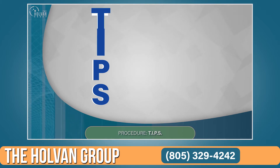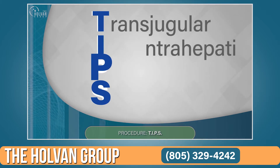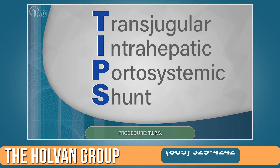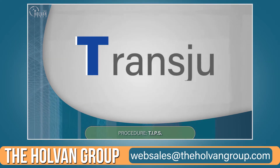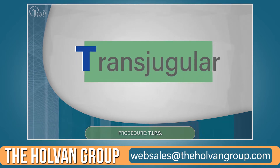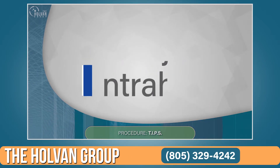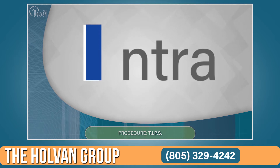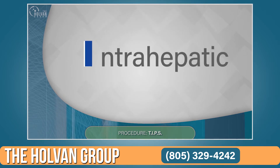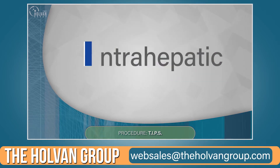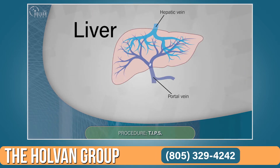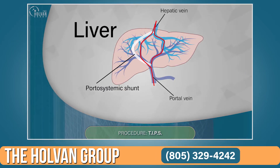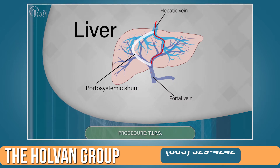TIPS stands for transjugular intrahepatic portosystemic shunt. 'Trans' is a medical word meaning through, so transjugular means through a vein in the neck. 'Intra' means inside of, so intrahepatic means inside the liver. Portosystemic shunt means the tube is placed inside the liver. Normally, blood enters the liver from the portal vein and is filtered through the liver before it goes back to the heart.